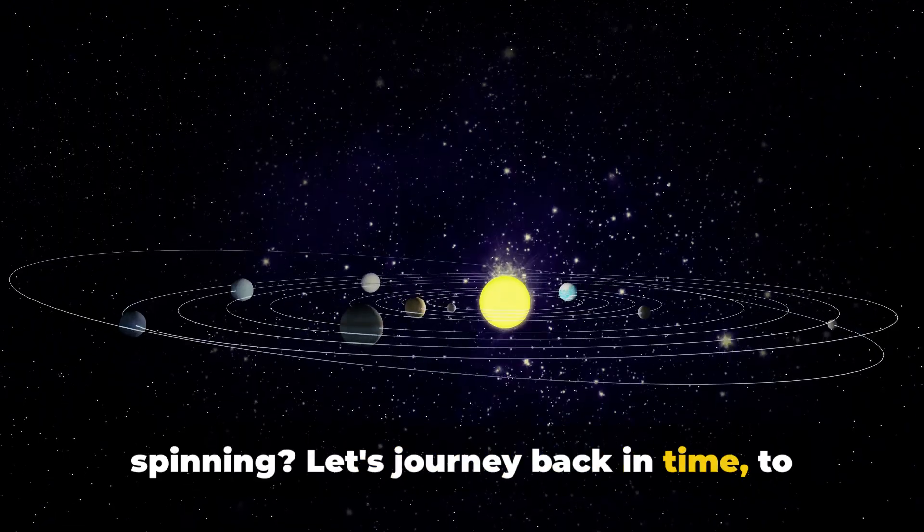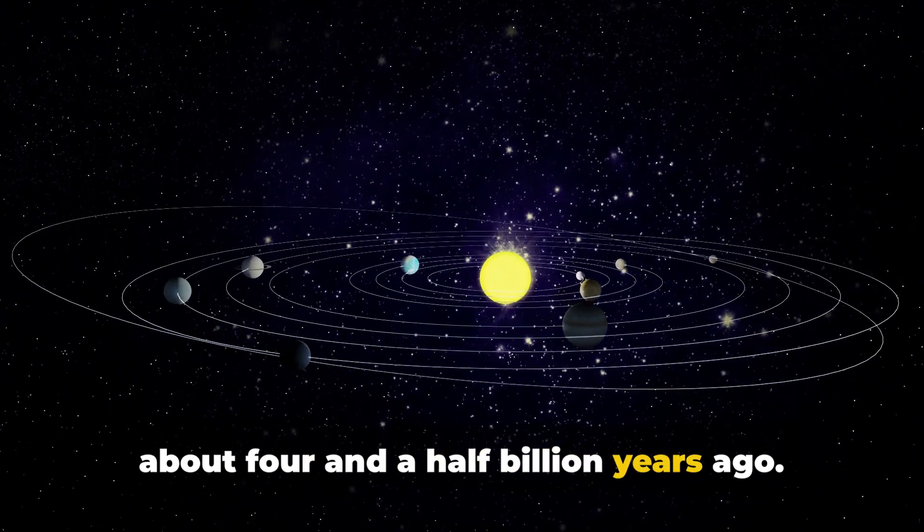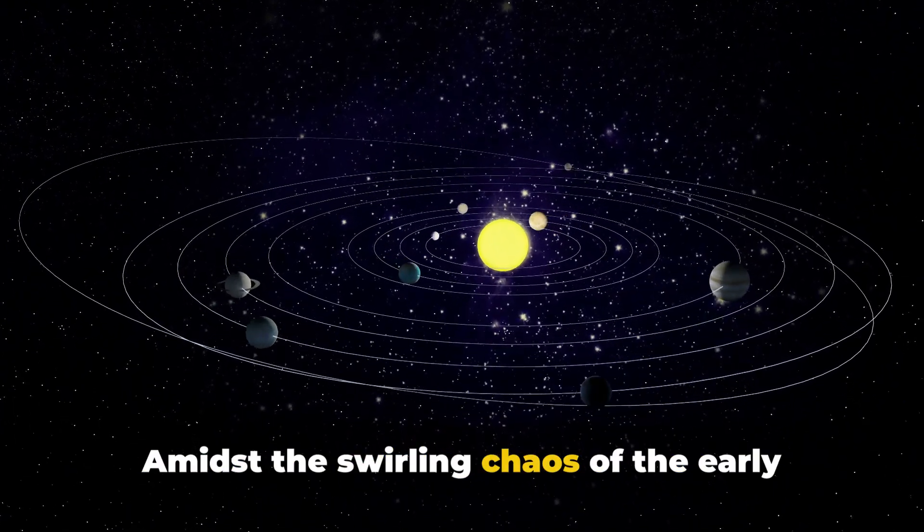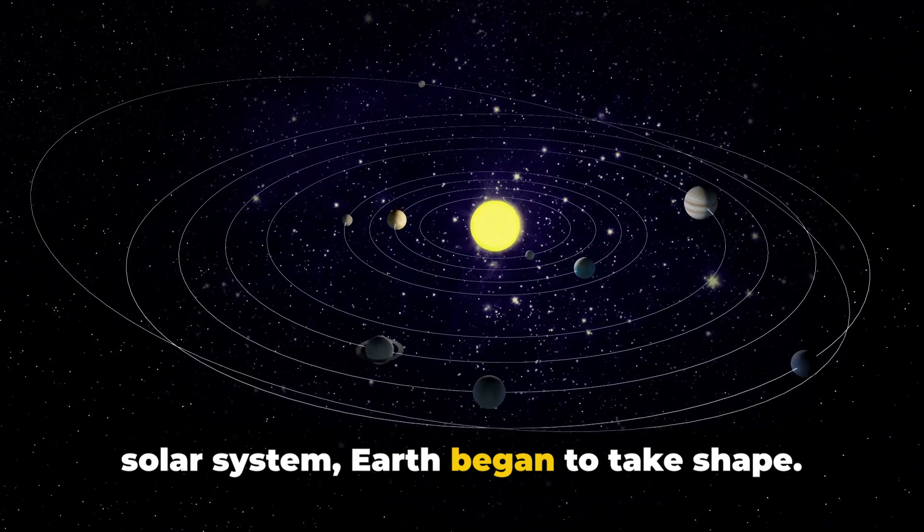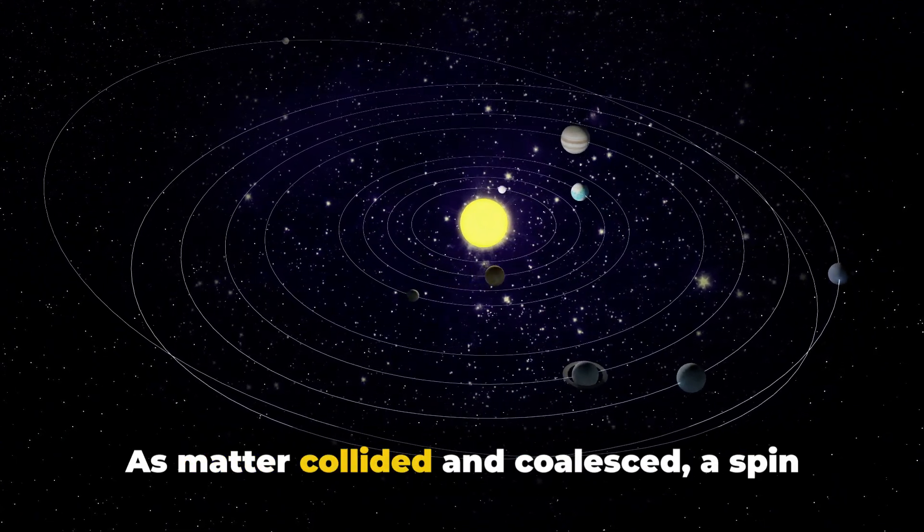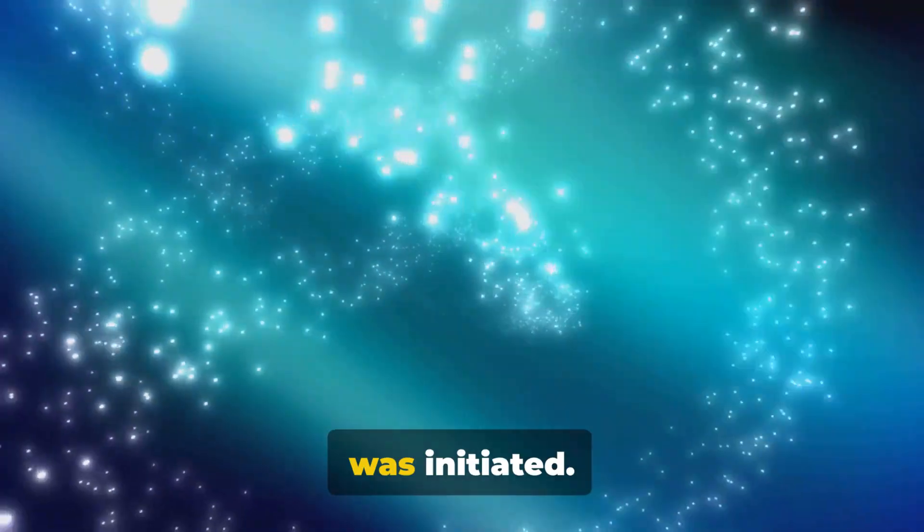Let's journey back in time to about four and a half billion years ago. Amidst the swirling chaos of the early solar system, Earth began to take shape. As matter collided and coalesced, a spin was initiated.